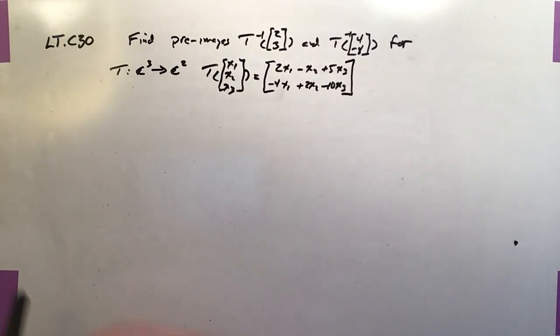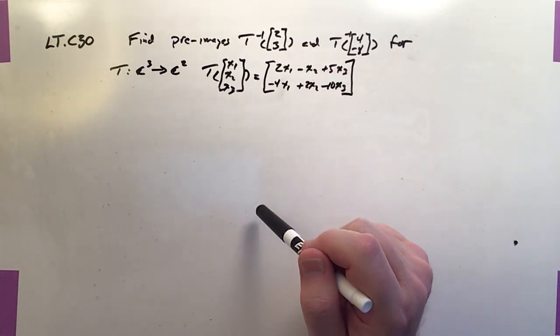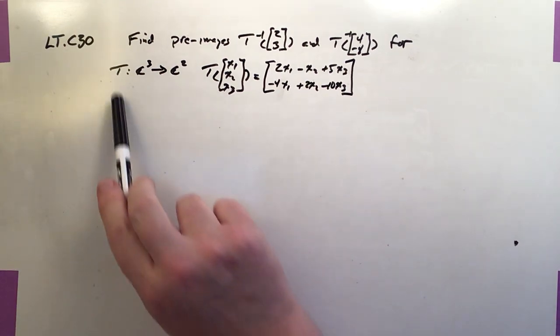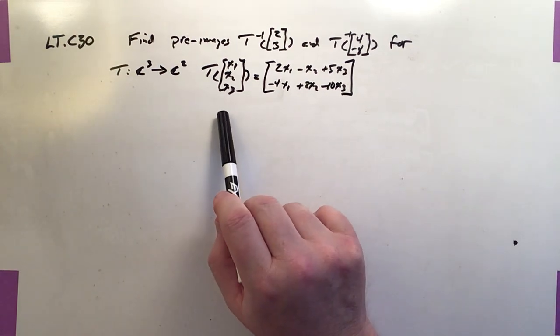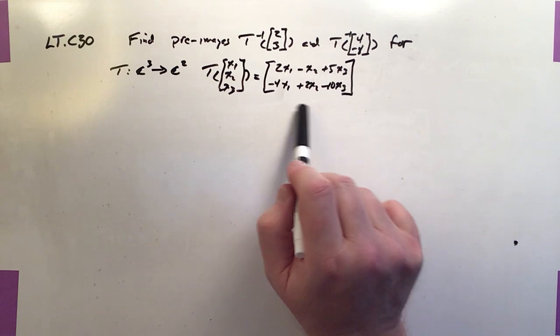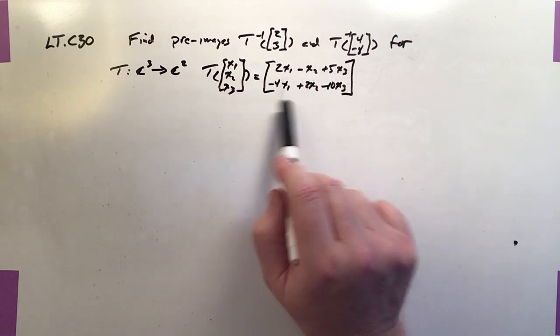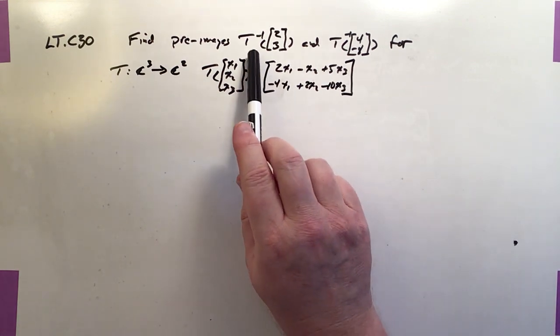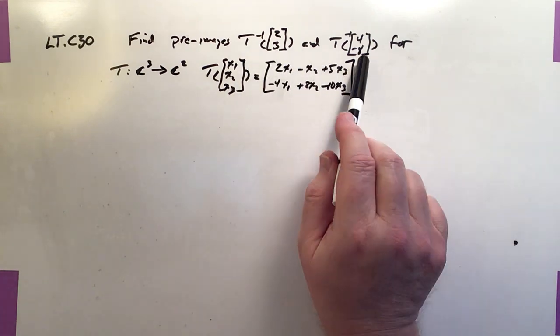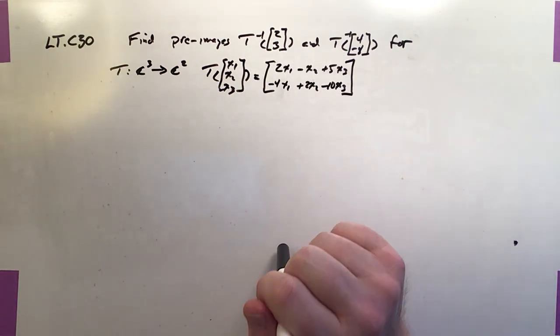Okay, this is Linear Transformation C30, and we're talking pre-images now. Every linear transformation, of course, maps one vector onto a new vector. And the question is, how do we reverse the process? That is, how do we figure out what vector was mapped onto these as solutions? And that's what pre-images do.